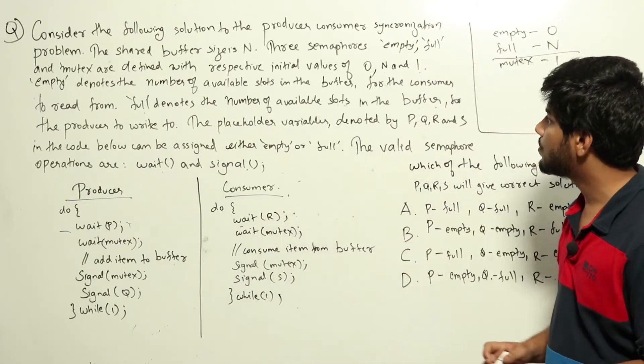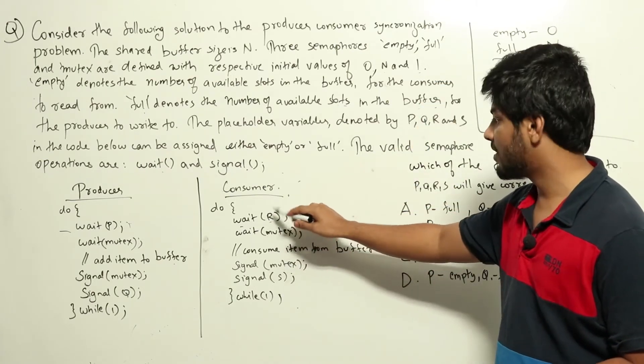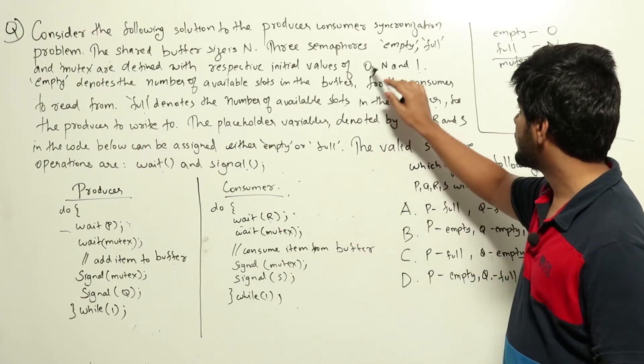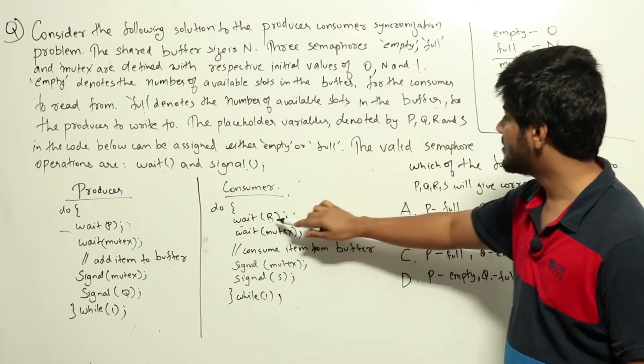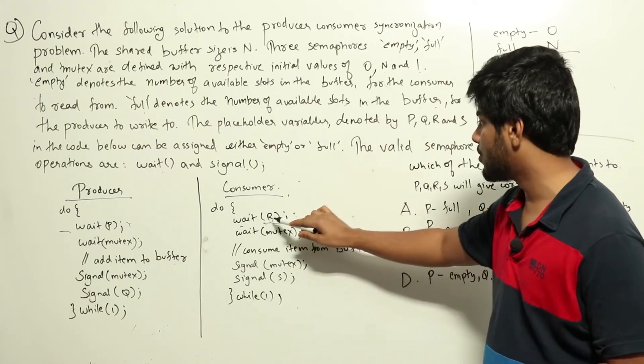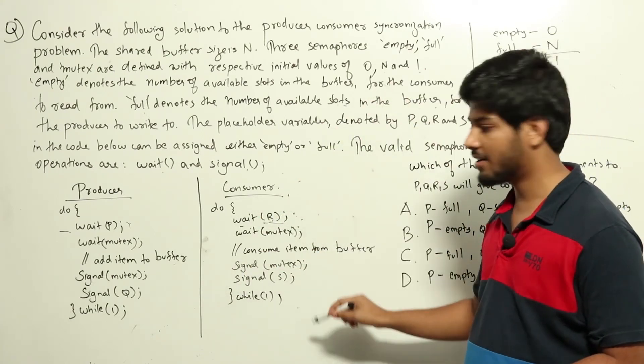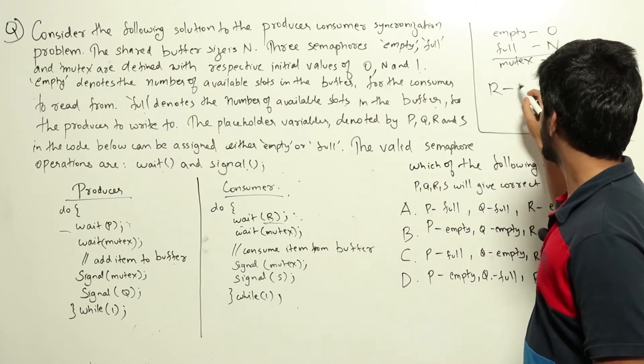Now, this will be blocked if R is full, it will be wait applied on n. That will proceed fine without any issues. So that is not correct. If R is empty, meaning that this will be blocked here. Wait, when applied on 0, this will be blocked here. Unless someone increases the value of empty, only then it can proceed. So R will be empty.